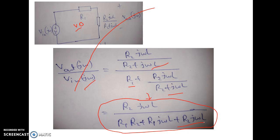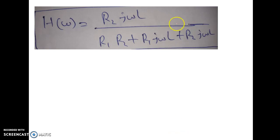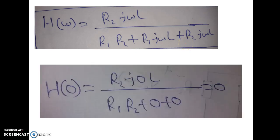To determine what kind of filter this is, we put ω equal to 0 and ω equal to infinity. The transfer function is R2·jωL divided by (R1·R2 + R1·jωL + R2·jωL). When ω equals 0, we get H(0) equal to 0. This confirms it is not a low-pass filter or a band-stop filter. It may be a band-pass filter or a high-pass filter — we need to check H(∞).